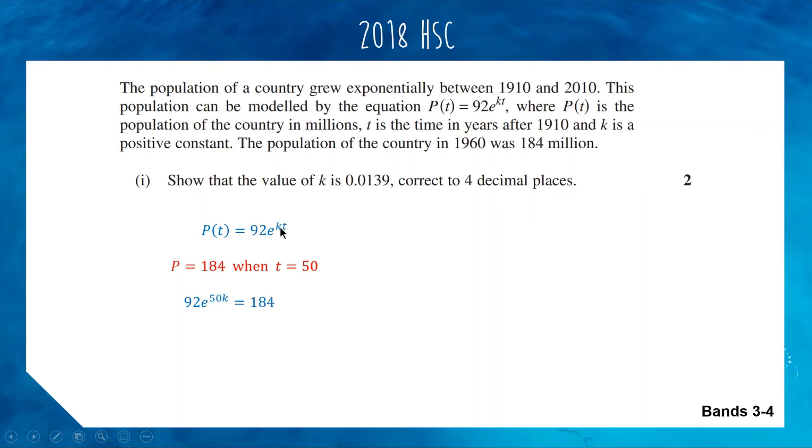We can sub into our equation and solve for k. We have 92e to the 50k equals 184 and we're solving for k. First we'll divide both sides by 92, and luckily 184 is 2 lots of 92. So we get e to the 50k equals 2. We'll take ln of both sides. On the left we end up with 50k. On the right we end up with ln of 2. Now we divide by 50 and ln 2 divided by 50 works out to be approximately 0.0139 as required.